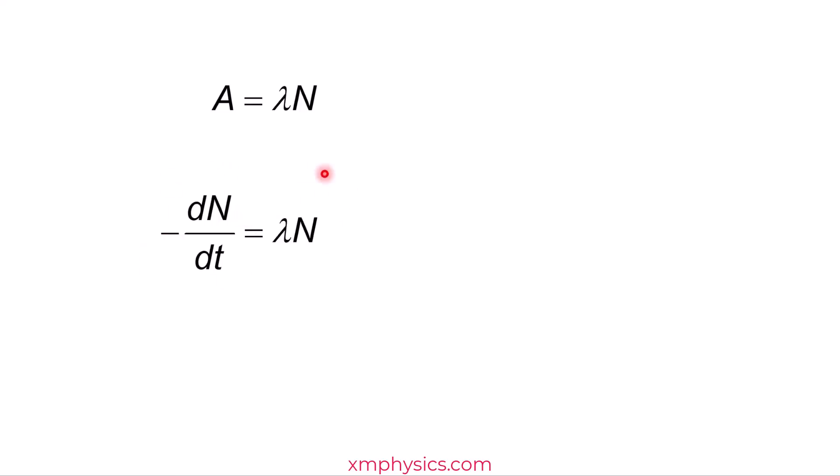Now if you are good with your math, you straight away realize that you are going to do integration. So let's rearrange the terms so that on this side, we have all the terms that contains N. On the other side, we have all the terms that do not contain N. Now we are ready to integrate both sides.